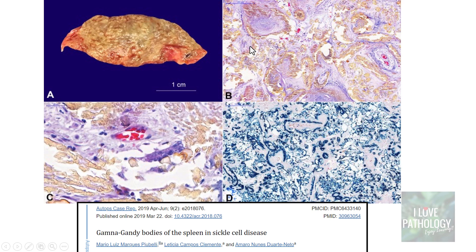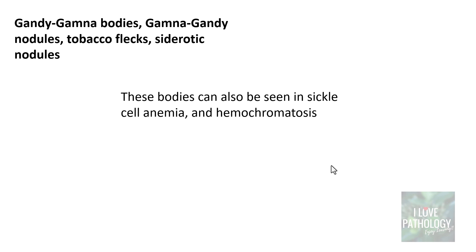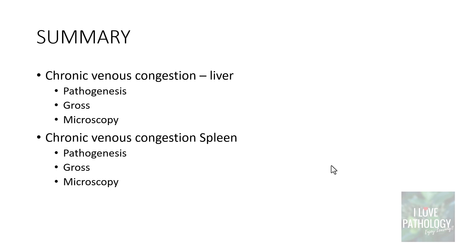Here is another classical appearance of a Gamma-Gandy body, and a special Perls' iron stain demonstrating deposition of iron in these Gamma-Gandy bodies. Note that Gamma-Gandy bodies are not specific to chronic venous congestion of the spleen alone — they can also be seen in sickle cell anemia, hemochromatosis, and other organs in various conditions such as renal cell carcinoma, liver carcinoma, pituitary tumors, and certain forms of lymphoma. So in chronic venous congestion you can find Gamma-Gandy bodies, but they are not specific to CVC spleen alone.